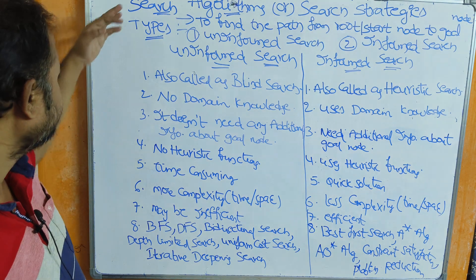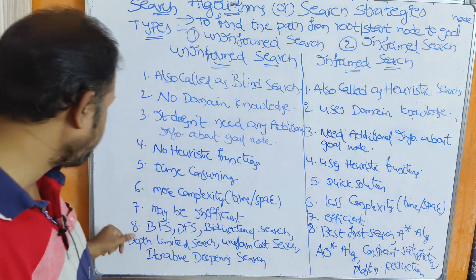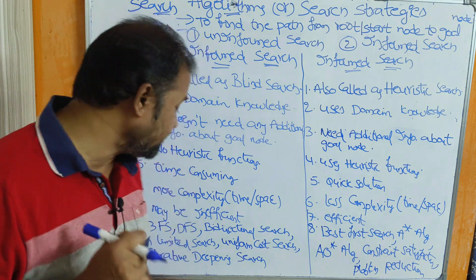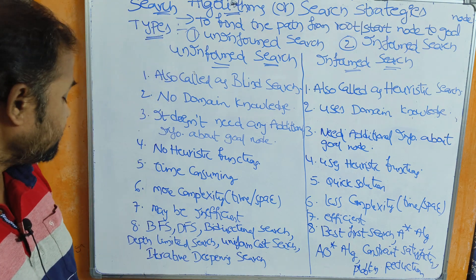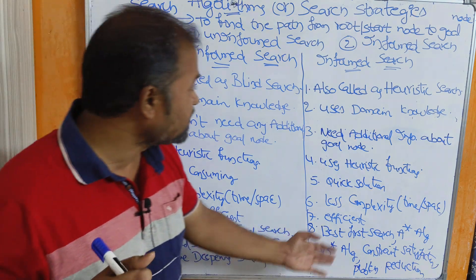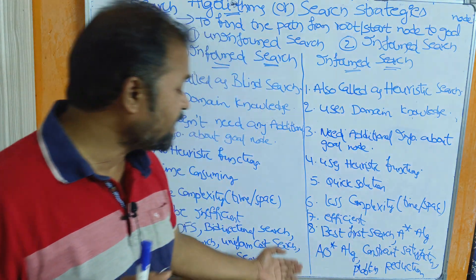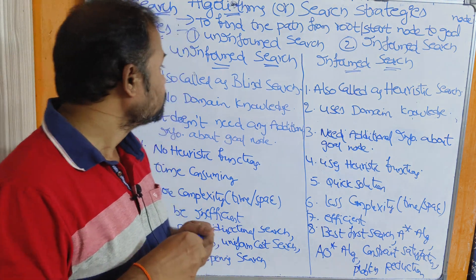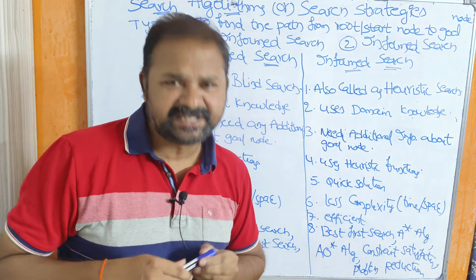The examples of uninformed search techniques are BFS (breadth-first search), DFS (depth-first search), bidirectional search, depth-limited search, uniform cost search, and iterative deepening DFS. Whereas the examples of informed search techniques are best-first search, A* algorithm, constraint satisfaction, and problem reduction. This is an overview of the various search algorithms or search strategies.